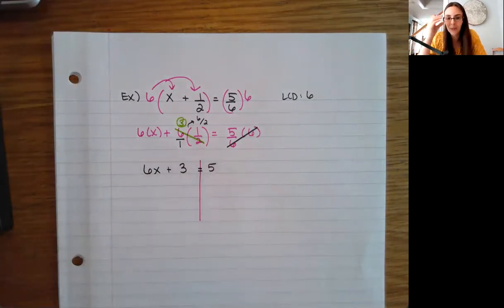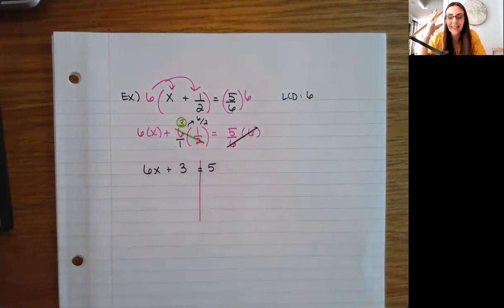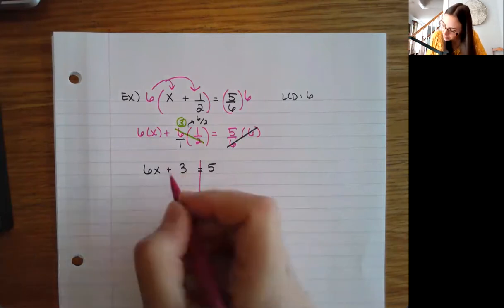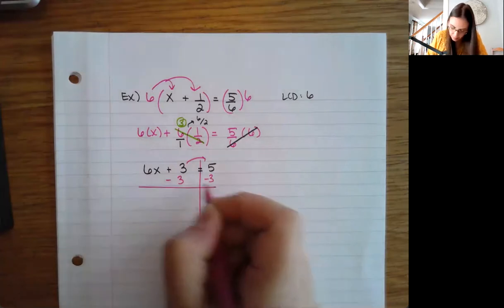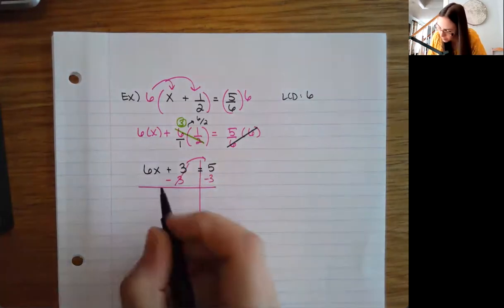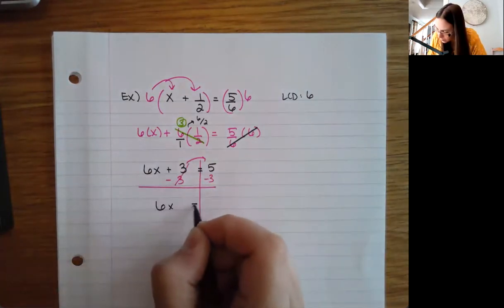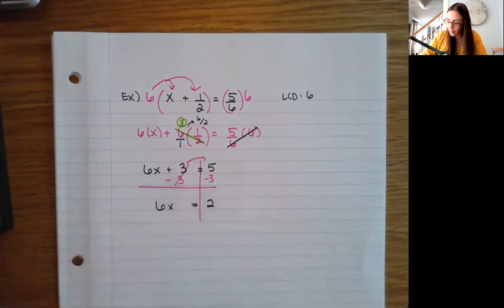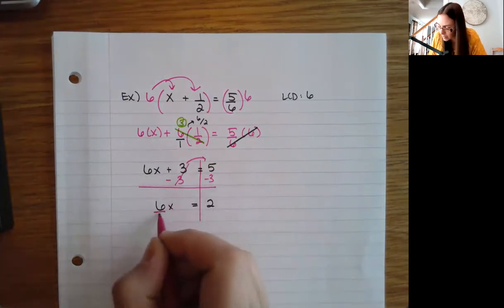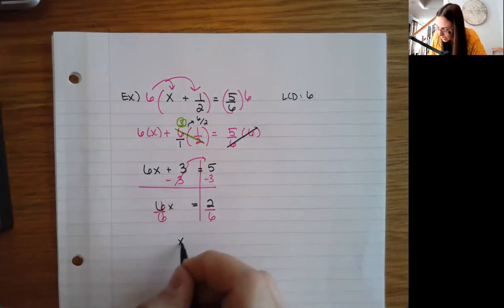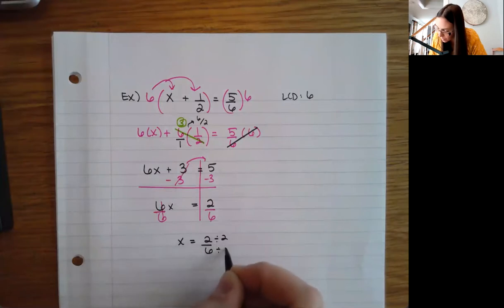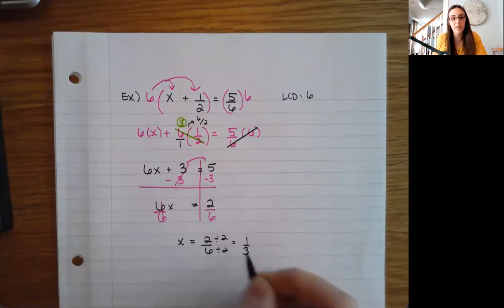Now think back to your solving rules. I bring that three to the other side to start getting the x term by itself. Then I divide both sides by six. I can divide these both by two, and I get one third as my final result.